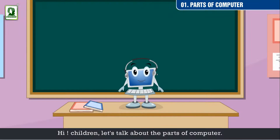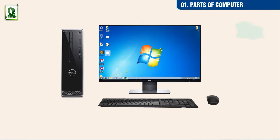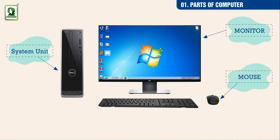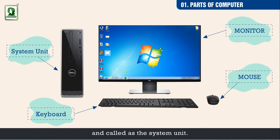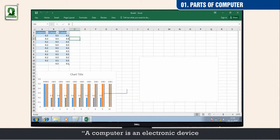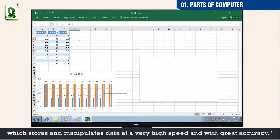Hi children, let's talk about the parts of a computer. Monitor, system unit, mouse, and keyboard — all four of them put together make a computer. This unit contains the central processing unit, or CPU, and is called the system unit. A computer is an electronic device which stores and manipulates data at a very high speed and with great accuracy.